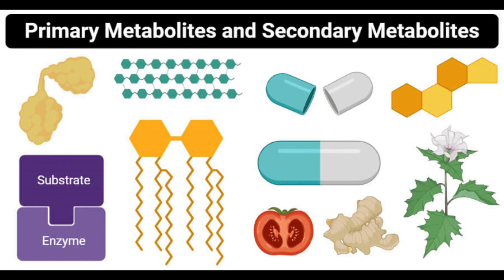Flavonoids are known to control the development of individual organs in the whole plant and contribute to stress-induced morphogenic responses of plants. They may also play critical roles as signaling molecules in mammals through their ability to interact with a wide range of protein kinases. Some examples of flavonoids found in various vascular plants include apigenin, luteolin, hesperetin, genistein, etc.